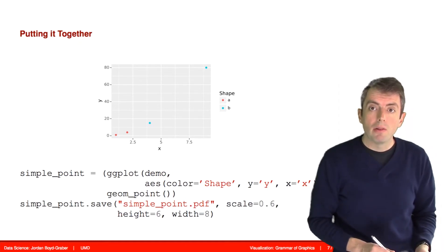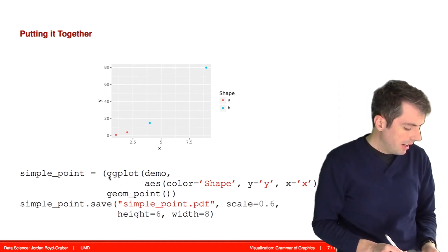What we're doing here is we're creating a Grammar of Graphics object. We do that by calling this ggplot function. Then we tell it what data we're going to look at. Here we're saying what aesthetic we're going to be using.